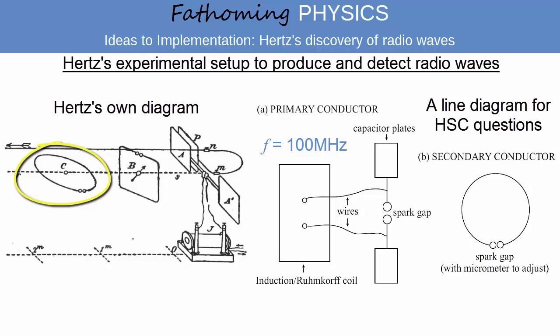The secondary conductor used in this particular experiment was a circle of wire of radius 35 centimetres, with a tiny gap whose width was adjustable with a micrometer.